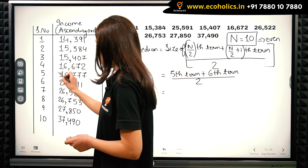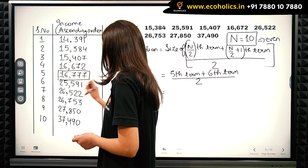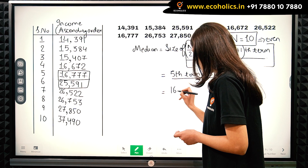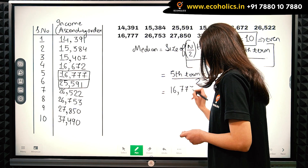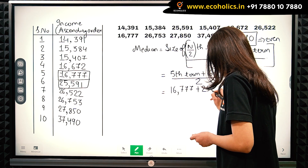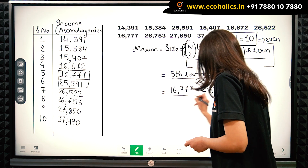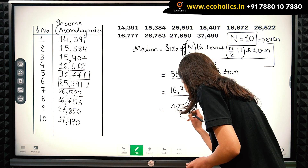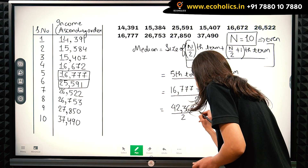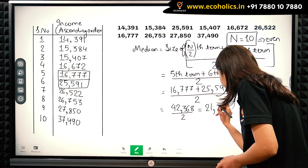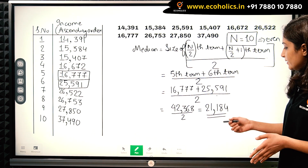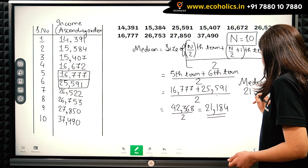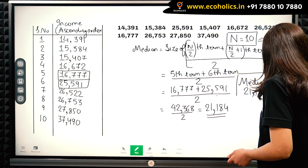Our 5th term is 16,772 and our 6th term is 25,591. So median = (16,772 + 25,591) / 2 = 42,368 / 2 = 21,184. Therefore, our median income for this example is rupees 21,184.